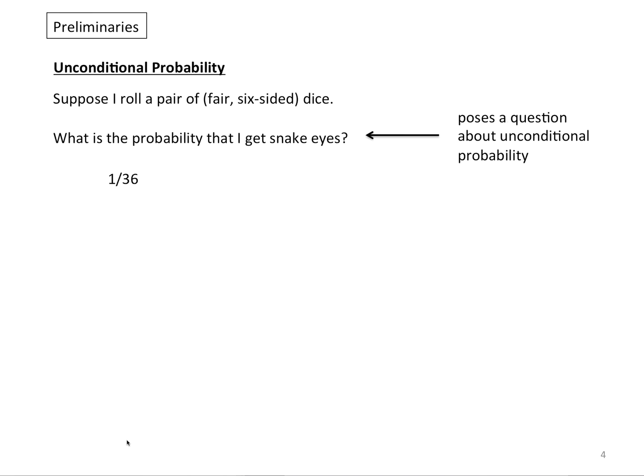Start with unconditional probability. Suppose I roll a pair of fair six-sided dice. What is the probability that I get snake eyes? It's 1 over 36. This poses a question about unconditional probability. I write it this way: the probability of snake eyes equals 1 over 36.